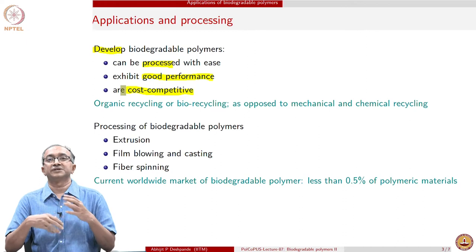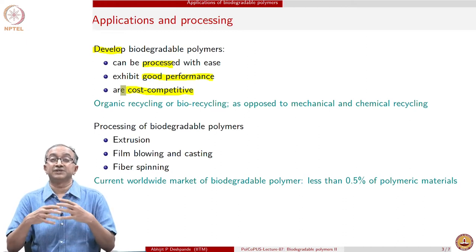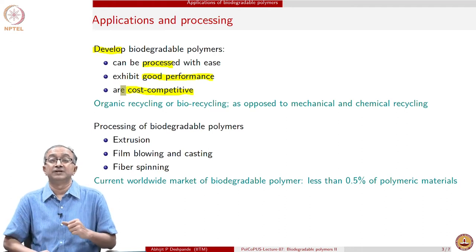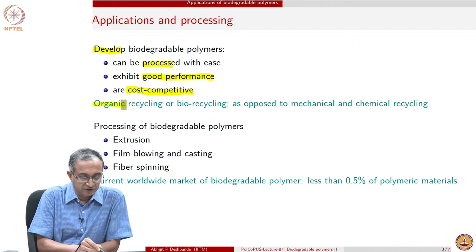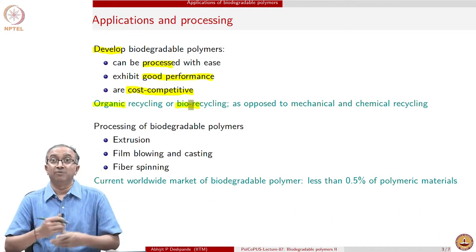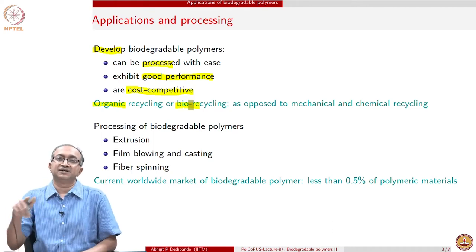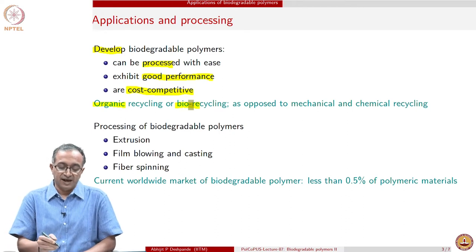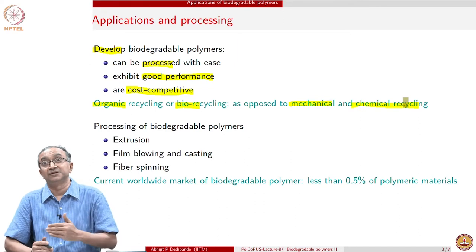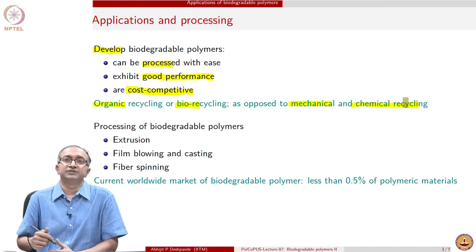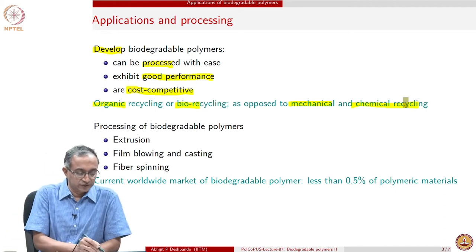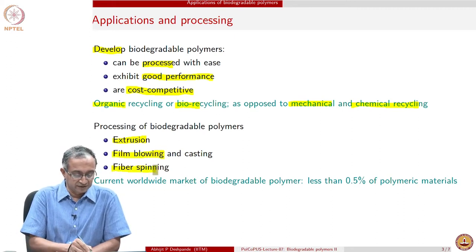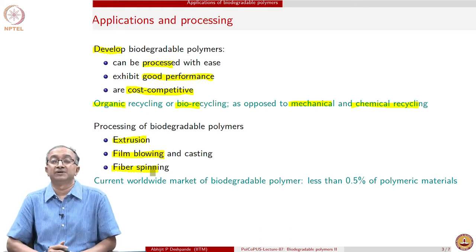Quite often, cost competitiveness is ensured by providing certain incentives and subsidies to many of these practices which may lead to overall sustainable practices. Generally, the emphasis with biodegradable polymers could be said to be on organic or biorecycling. Recycling is still the norm, but the recycling happens by integrating polymeric materials with the overall biogeochemical cycles, and the emphasis on mechanical and chemical recycling will be reduced. General techniques used for making objects out of biodegradable polymers remain the same — extrusion of polylactic acid, film blowing using polyhydroxybutyrate, and fiber spinning using polylactic acid.